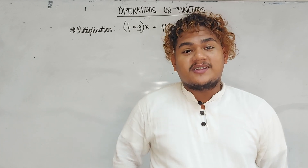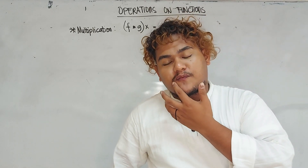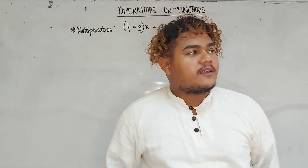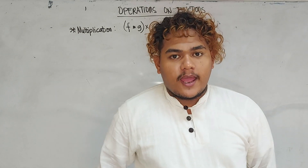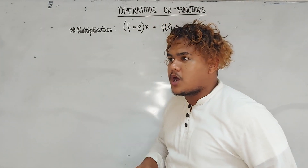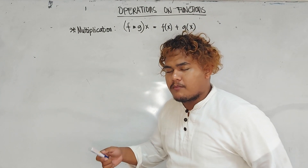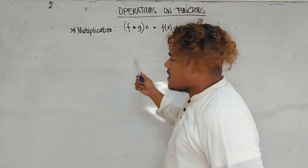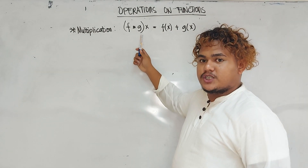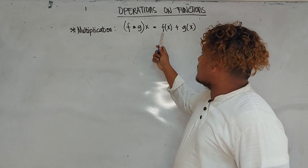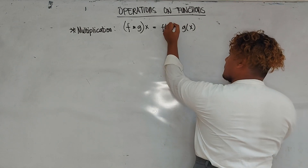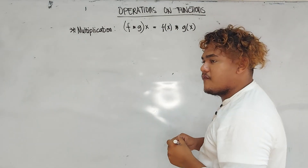A week ago, we already discussed the first two major operations, namely addition and subtraction. Now let's proceed to the third and the fourth — multiplication of functions. The concept goes like this: f times g of x is equal to f of x times g of x.